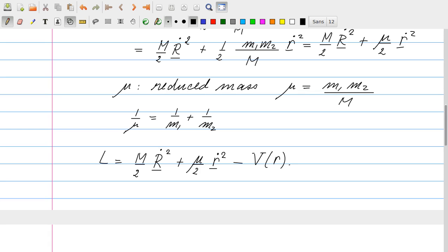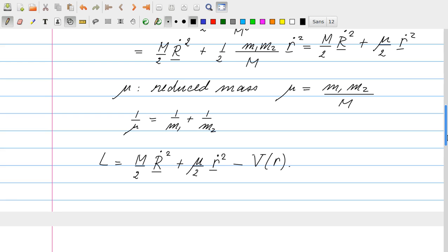So we can write up the Lagrangian now in terms of the capital R and the small r. So these are the kinetic energies, and here we have the potential. So we recall now that the center of mass kinetic energy is constant, because the center of mass velocity is constant. So the first term is just a constant, and we can leave that out of the problem.